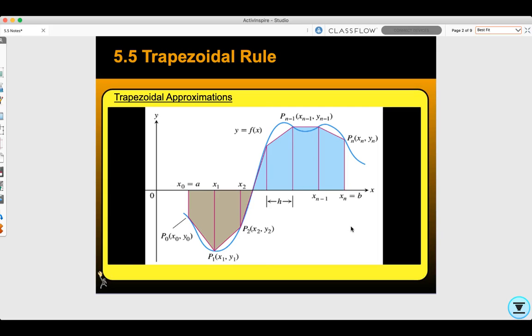Today we're doing section 5.5, the trapezoidal rule. We're going to use trapezoidal approximations to approximate the area between the curve and the x-axis, using individual trapezoids.